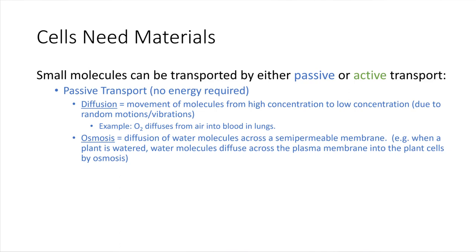How are things transported? It turns out that if we're talking about very small molecules that the cell needs, those small molecules can be transported in a couple of different ways. If they're very small molecules, they might be able to transport passively, which just means there's no energy required. With passive transport, there are a couple of rules that govern how it happens. When molecules undergo passive transport, they spread out. They start from a location where they're more highly concentrated and spread out to areas where they're less highly concentrated. This is called diffusion.